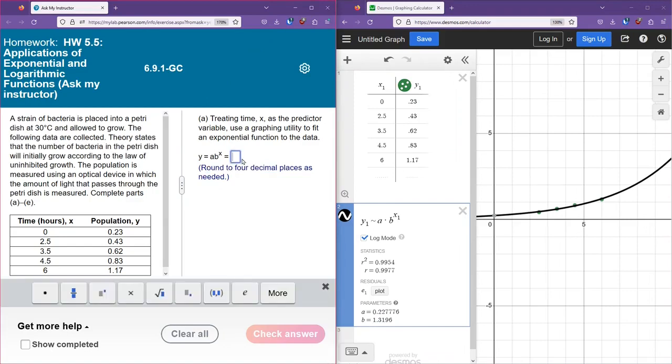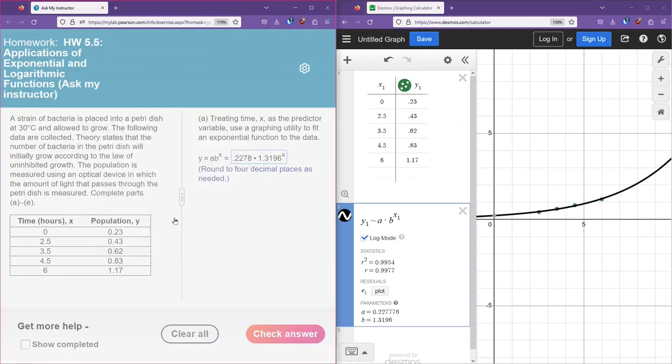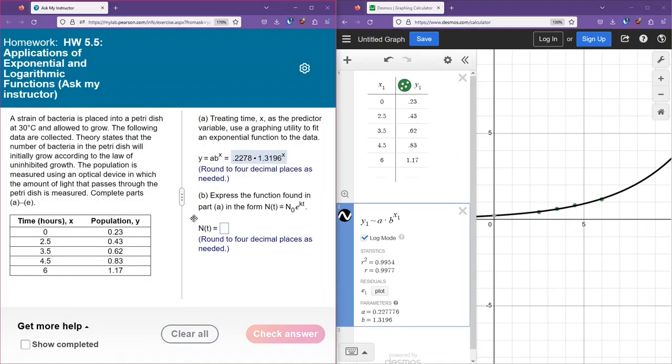Then down here in the bottom, we have an approximation for our a and b. And looking right here, it states that we want to round to four decimal places. So we're going to type in our model. That's going to be 0.2278. If I round to four decimal places, it will be 8. Then we're going to multiply that by b. b is 1.3196, rounded to four decimal places. Actually, it's not rounded. We've got all the decimals there, and this will be to the x power.